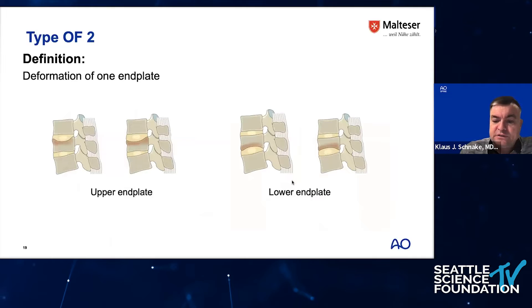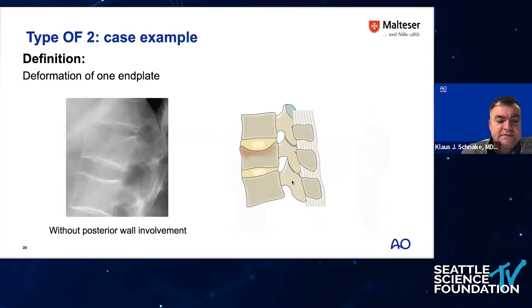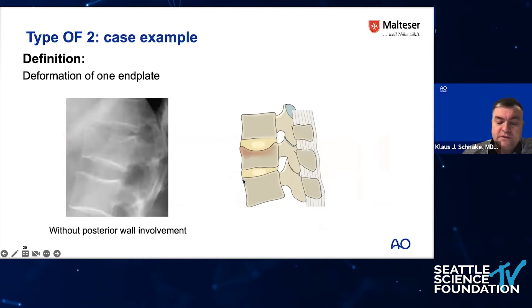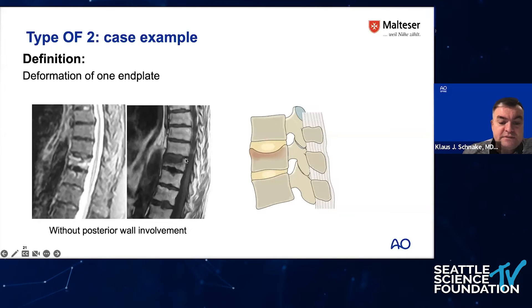OF2 means a deformation of one plate — upper or lower end plate — with only minor posterior wall involvement. Here's an example on X-ray where you can see a deformation of the upper end plate with no posterior wall involvement. Another OF2 example on MRI shows the edema clearly, but there is definitely no posterior wall involvement and only one end plate is affected.